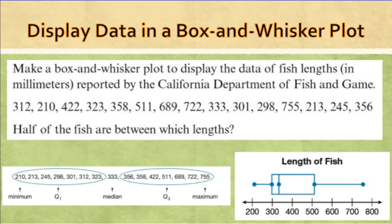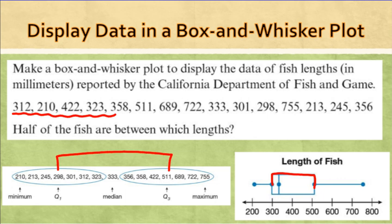This box and whisker plot has been done for us. It says: make a box and whisker plot to display the data of fish lengths in millimeters recorded by the California Department of Fish and Game. The data is listed, and they put it in order and made a box and whisker plot. The question is: half of the fish are between which lengths? We're looking for the interquartile range — from quartile one to quartile three — and the answer is between 298 and 511.